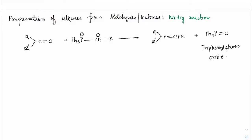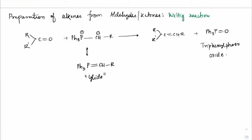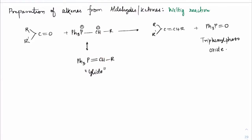This is the overall Wittig reaction. The triphenylphosphine reagent has resonance stabilization: Ph₃P=CHR. This can be written with plus and minus signs. The formation of this molecule is called a ylide (Y-L-I-D). The easier way to work out reactions: break the C=O bond and connect it to form C=C.